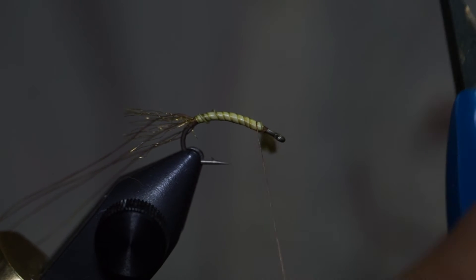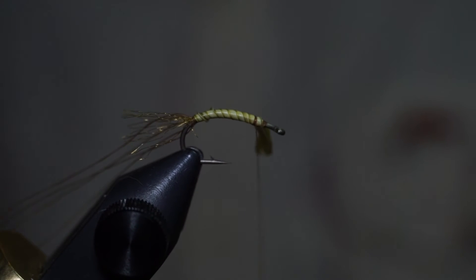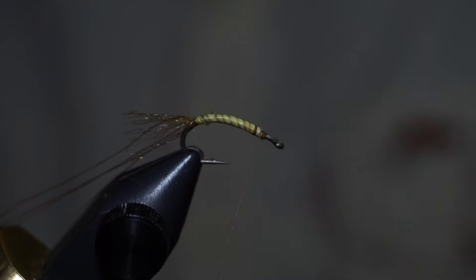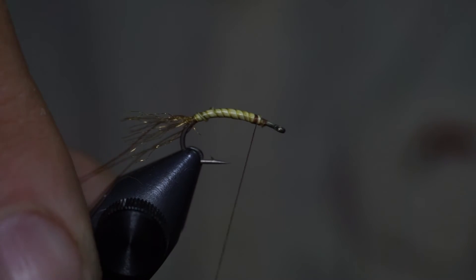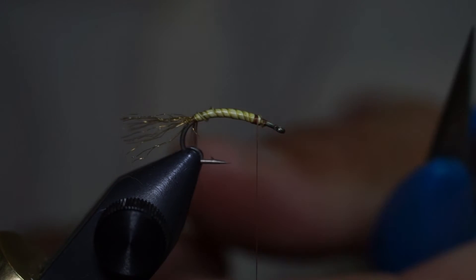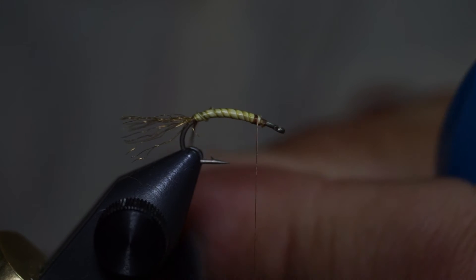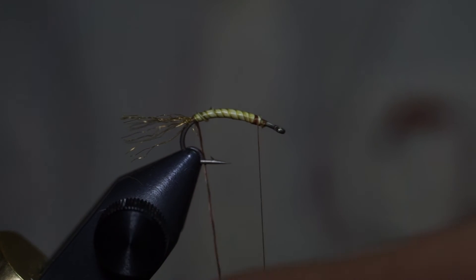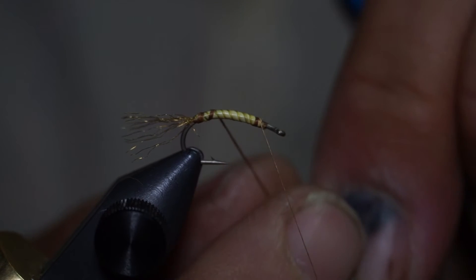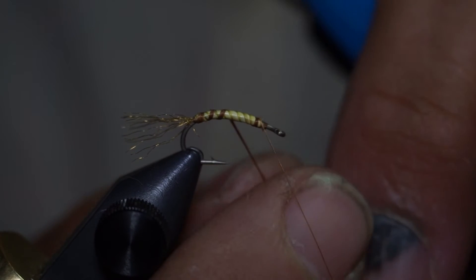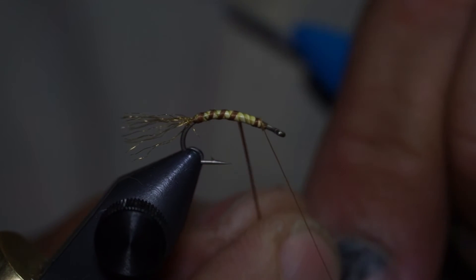Tie off the biots. And then next, what I'll do is I'll take those two looped threads, twist them, and then wrap them the opposite direction of the biots, like so, making a brown ribbing.